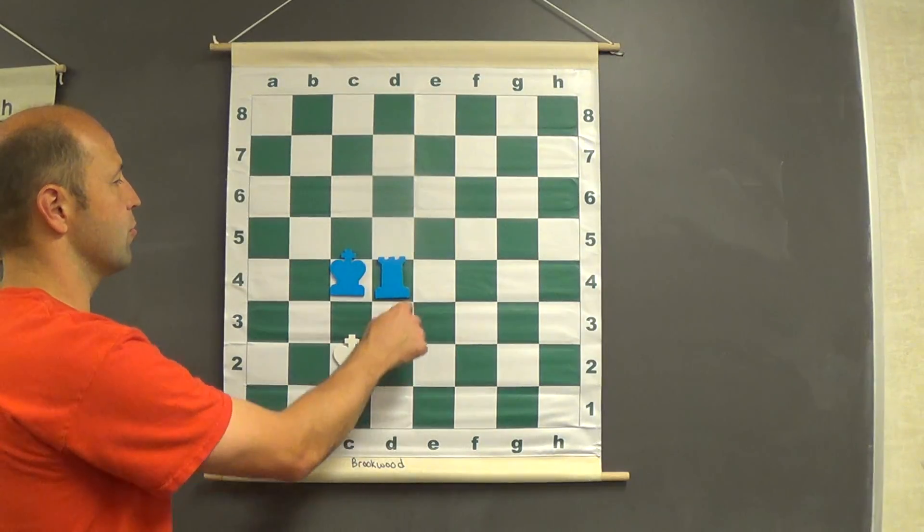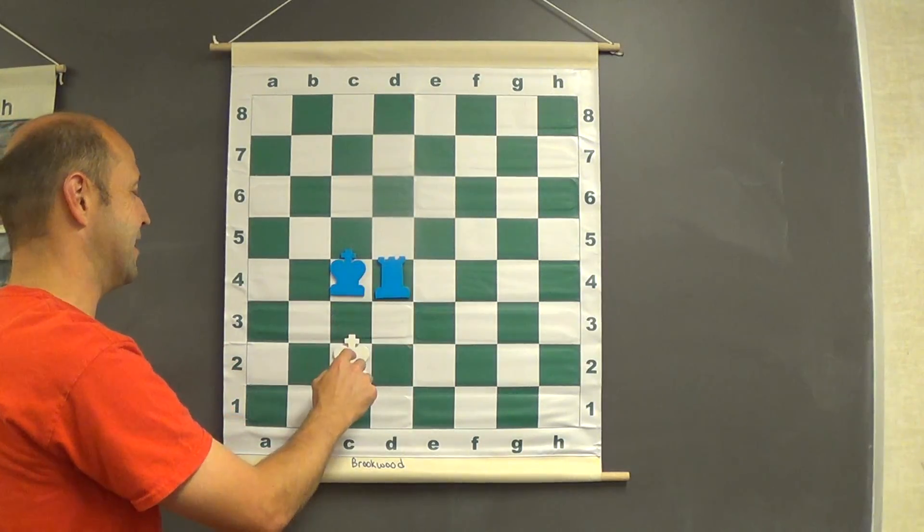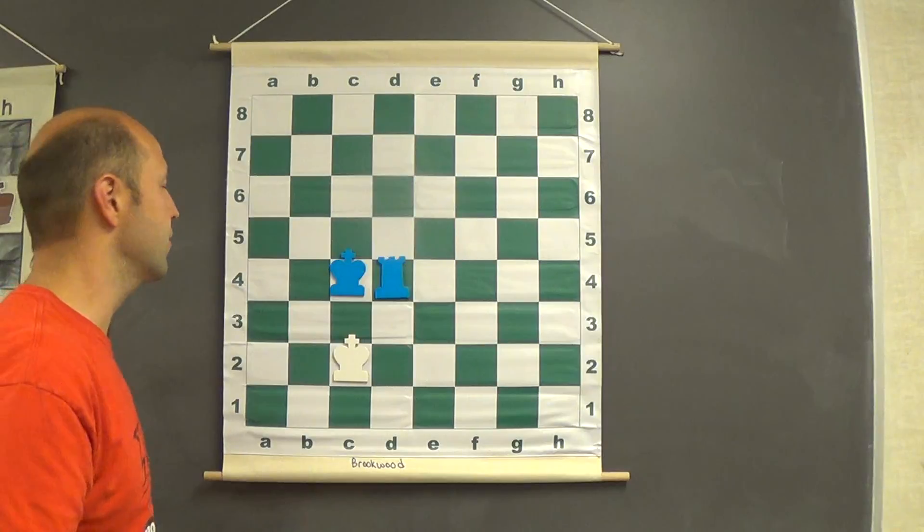So far we went through about eleven moves. So we're under the fifty moves.